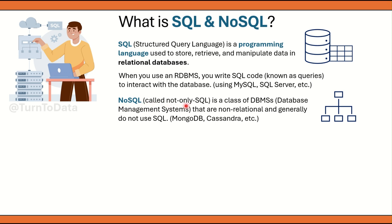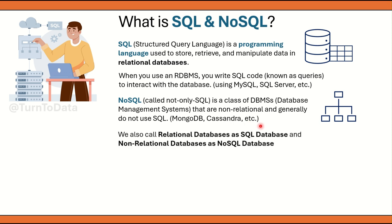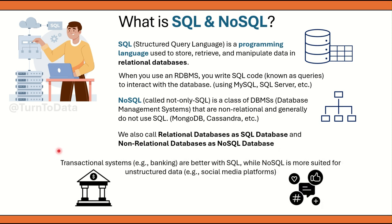Talking about NoSQL — it is also called 'not only SQL'. NoSQL is not a language, but a class of DBMS that are non-relational and generally do not use SQL. Some examples, as we saw in the last slide, were MongoDB and Cassandra. One thing to note is that we also call relational databases SQL databases and non-relational databases NoSQL databases. For example, transactional systems like banking mostly use SQL, whereas social media platforms are more likely to use NoSQL because it is much better suited for unstructured data. Many corporate systems use SQL, and there are many companies that use a mix of SQL as well as NoSQL.